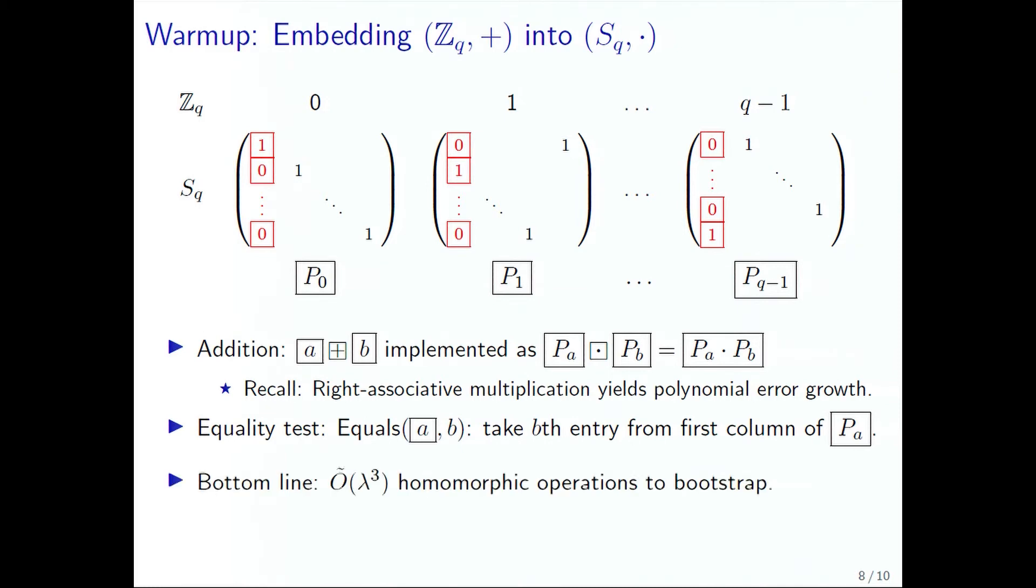In this warm-up, each multiplication requires Q squared homomorphic operations, and since Q is quasi-linear in the security parameter and there are lambda total elements in the secret key, it will require quasi-cubic number of homomorphic operations to bootstrap, which is already an improvement over the previous result.